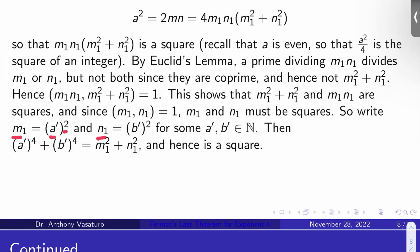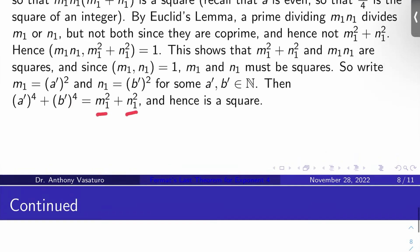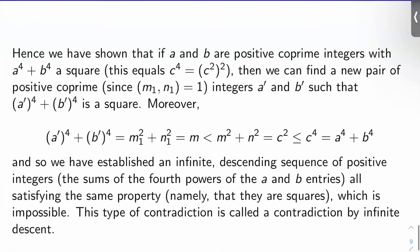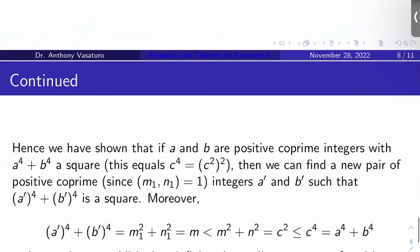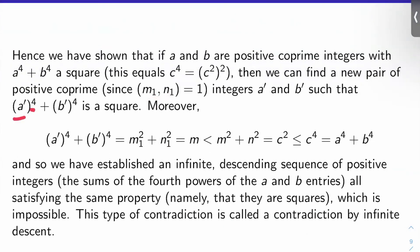Let's write m1 = a'² and n1 = b'² for some positive integers a' and b'. Then a' to the fourth plus b' to the fourth equals by definition m1² + n1², but m1² + n1² is a square. So a' to the fourth plus b' to the fourth is a perfect square. So we've shown: if a and b are positive co-prime integers with a⁴ + b⁴ a square (namely c⁴ = (c²)²), then we can find a new pair of positive co-prime integers a' and b' — co-prime because m1 and n1 were co-prime — such that a'⁴ + b'⁴ is also a square.